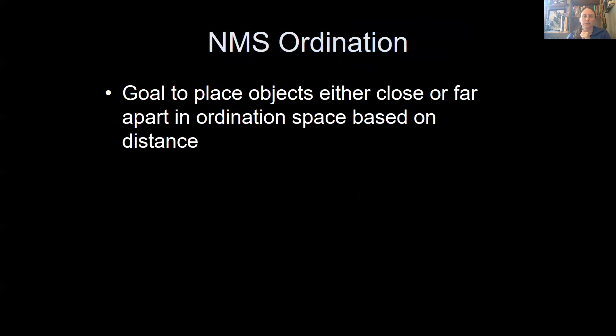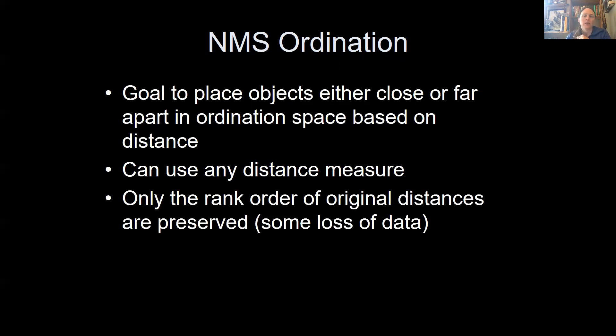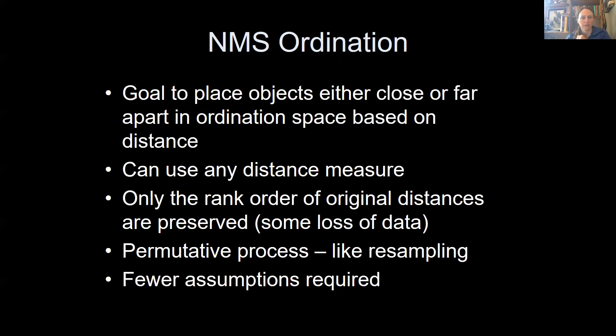So the goal of ordination is to place objects either close or far apart in ordination space based on the distance between their communities. What's cool about NMS ordination is it can use any distance measure, so we'll ask it to use a Bray-Curtis distance measure. And again, it's based on this rank order of the original distances. So there's a little bit of loss of data there, but not too bad, and it's a permutative process. So there are fewer assumptions required for ordination and NMS ordination than some other kinds of ordination that you might have heard of, like principal components analysis ordination, canonical correspondence ordination, polar ordination, lots of different kinds of ordination.